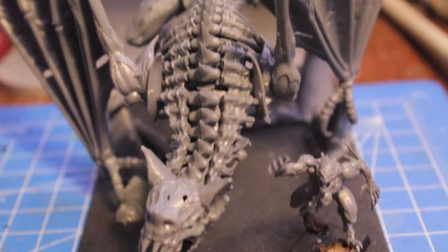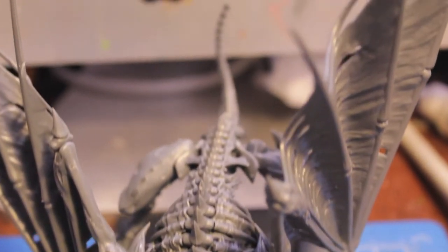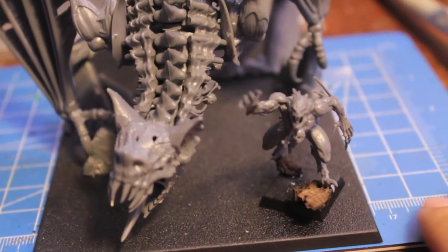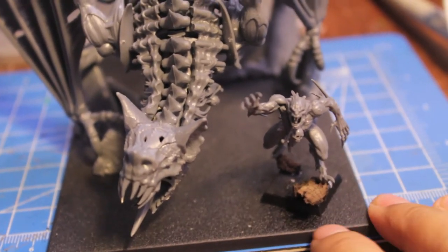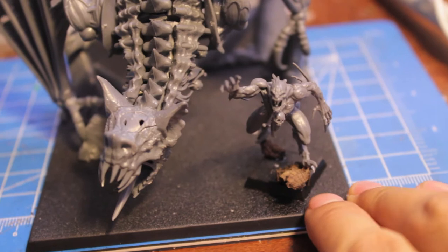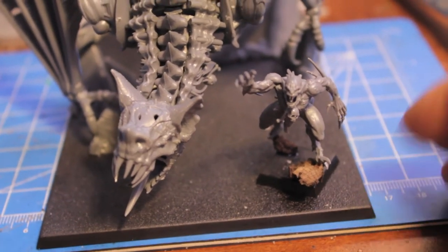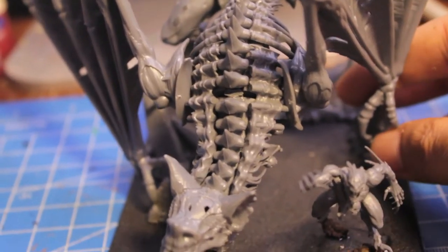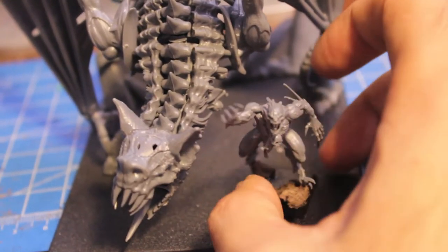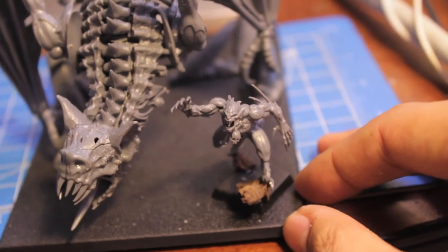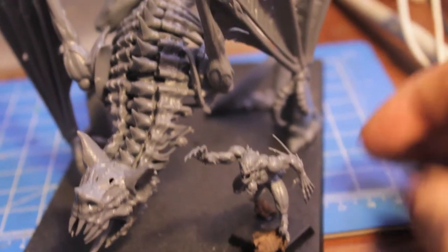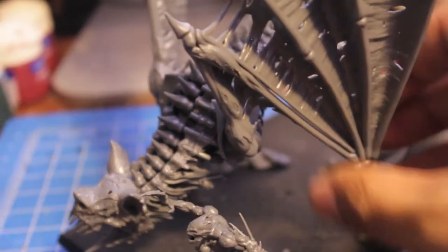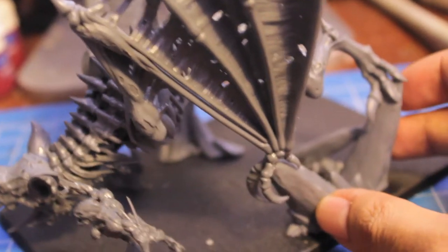and here he is, the finished Terrorgeist. Wow, is this a massive model I built up. As you can see, the Ghoul King it comes with, the set comes with an extra 20mm square base so instead of gluing the Ghoul King onto the Terrorgeist I decided to build him separately that way I can just pop him on the base whenever the two of them are together on the battlefield or I can take him off and just use the Terrorgeist as a rare option without the Ghoul King on it. But man,